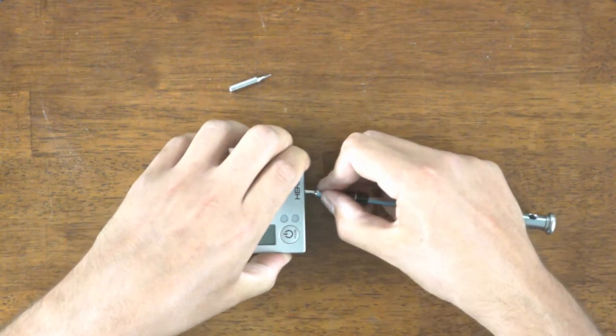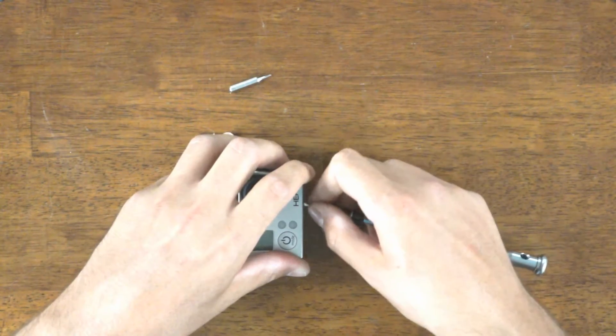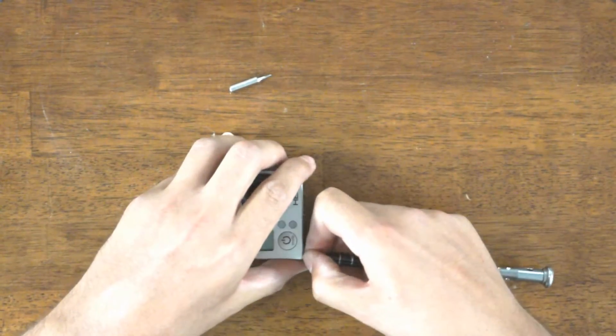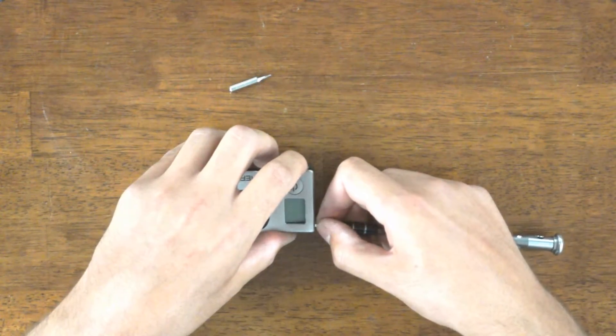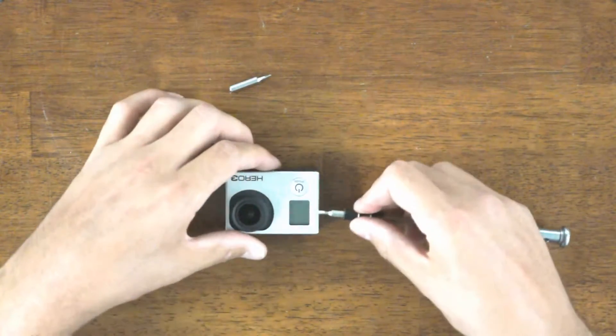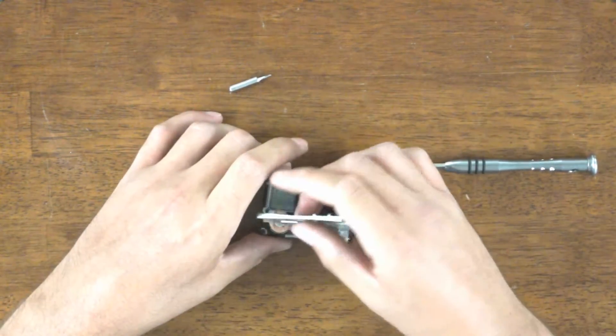I'm using a small flat head screwdriver to carefully pry the top cover off. There are a few tabs all the way around. Nothing that you can damage. Though, of course, make sure near the LCD that you don't go under it and lift that up. But once all the tabs are up, you should be able to pop it off.